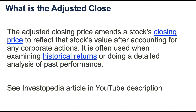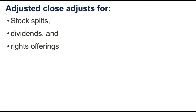This paragraph came from an Investopedia article, and you can find the link in our YouTube description. What the adjusted close does is it adjusts the closing price for corporate actions, which includes stock splits, dividends, and rights offerings. This semester, we will see the first two exhibited often.